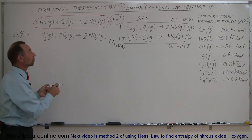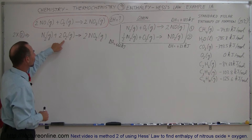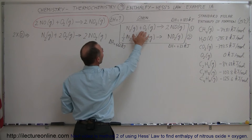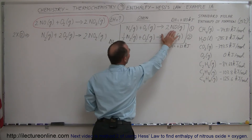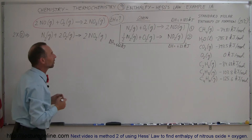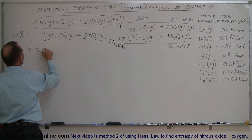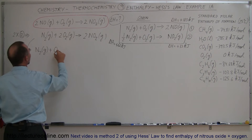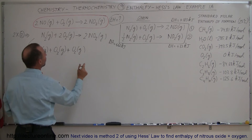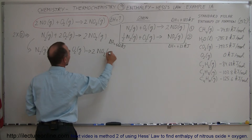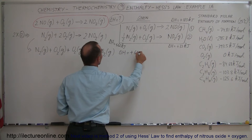Now I'm going to rewrite that. I see nitrogen gas and 2 moles of oxygen gas on the left. I'm going to write this as nitrogen gas plus 1 mole of oxygen gas plus 1 mole of oxygen gas — I have the same thing, I just wrote it separately — producing 2 moles of nitrogen dioxide gas. In essence nothing has changed, so my delta H is still +66 kilojoules.